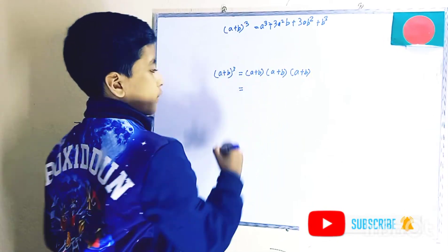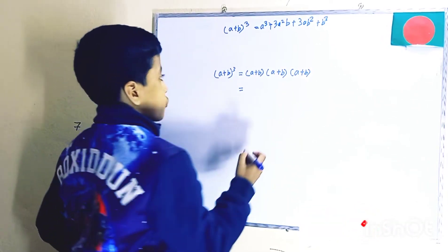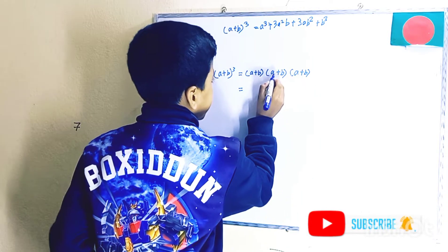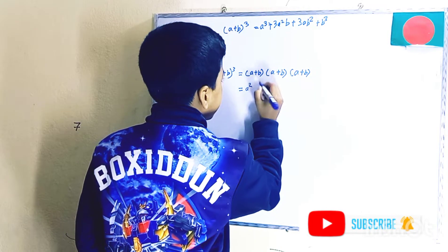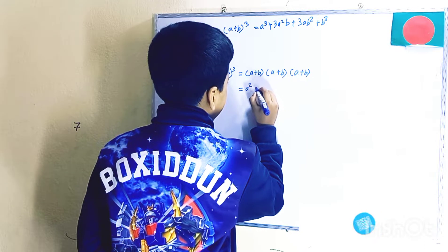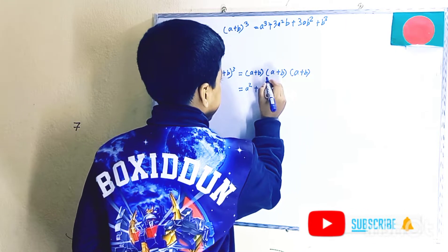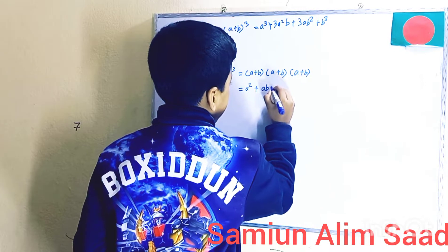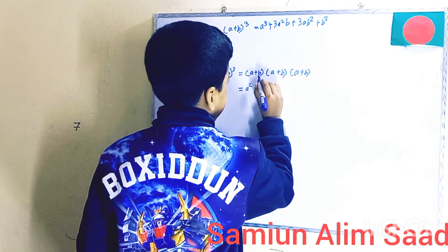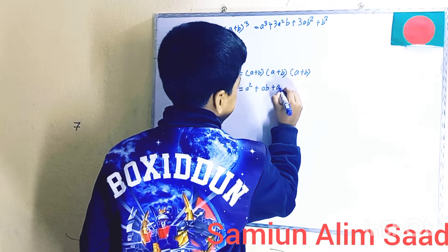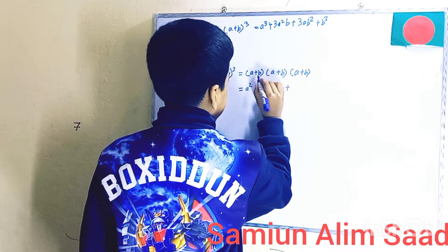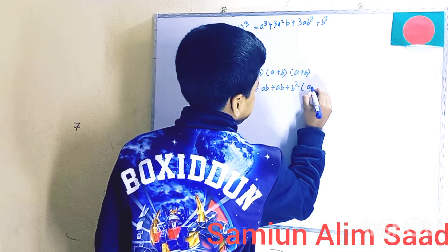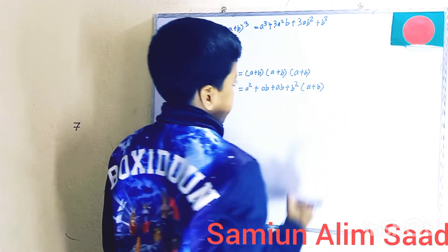We need to multiply the first two first. A times A is equal to A square. A times B is equal to AB. B times A is equal to AB. B times B is equal to B square. Then we just put A plus B right next to it.